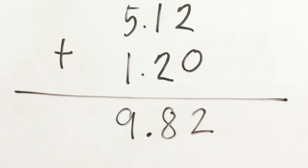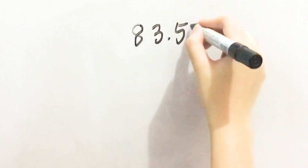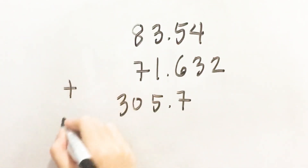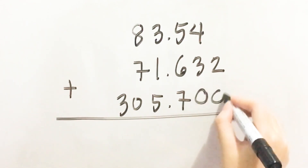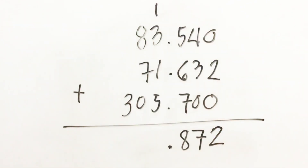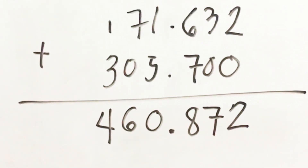Let's have one more. Now try solving this problem on your own. Find the sum of eighty-three and fifty-four hundredths, seventy-one and six hundred thirty-two thousandths, and three hundred five and seven tenths. That's correct! The sum of these decimal numbers is four hundred sixty and eight hundred seventy-two thousandths.